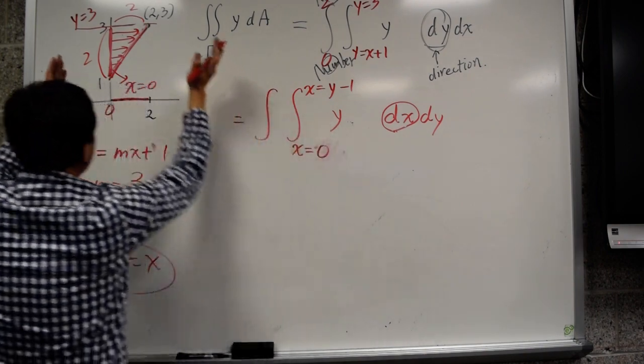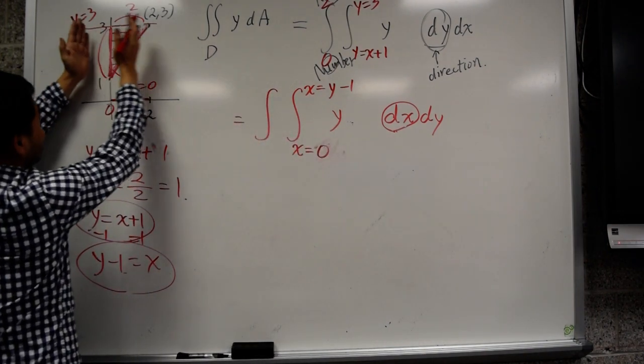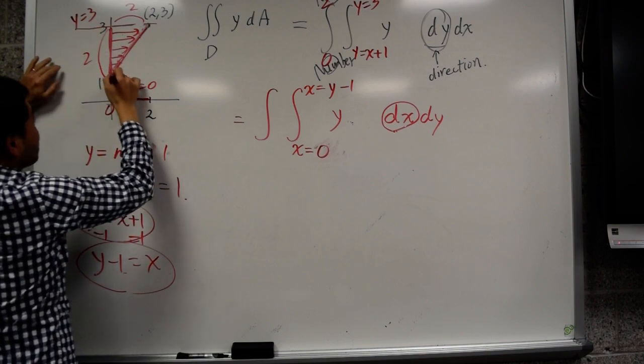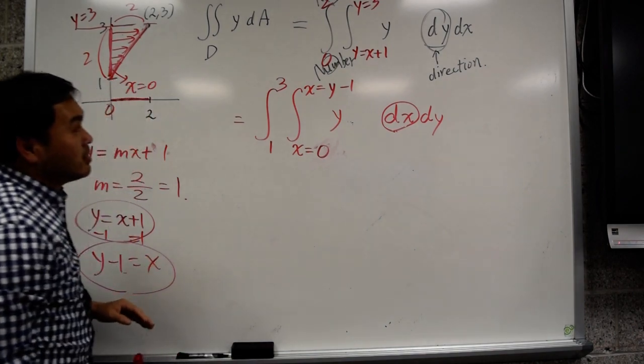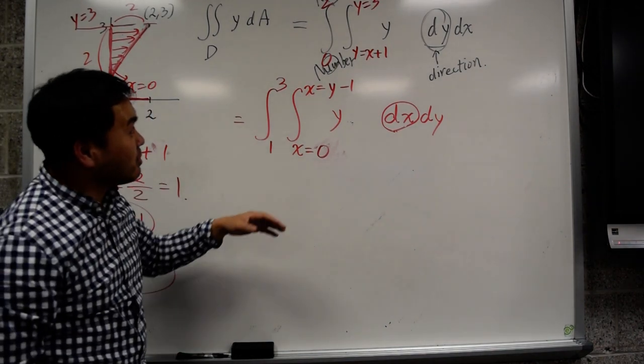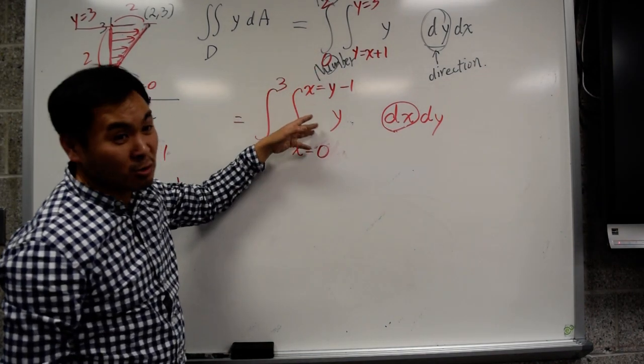And then once you integrate, add up everything that gets tallied up and it goes from 1 to 3, right? So here it's 1 to 3. Now, you might wonder, well, if you can do one way, why do you have to know both ways?